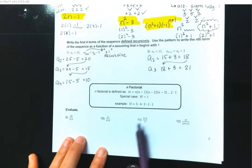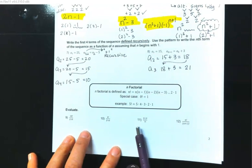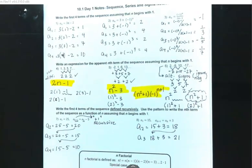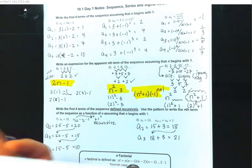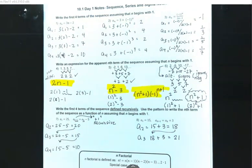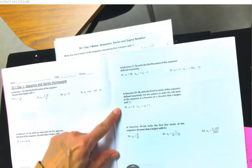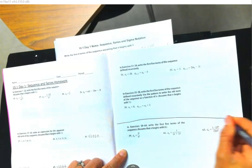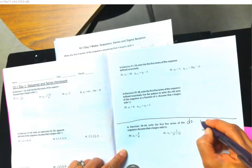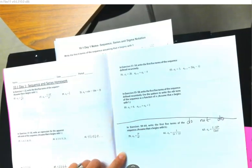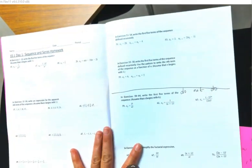I'm going to save factorial for tomorrow. Make sure you show me these notes for your credit today. You do have a homework assignment: it is 10.1, day one, problems 15 through 19, and also 51 all the way down to the bottom. We're going to cover that bottom half tomorrow, so do not do that part yet.